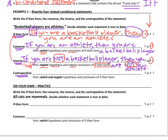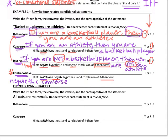For the contrapositive, we have to switch and negate the hypothesis and the conclusion of the if-then form. Going back to the if-then form: if you're a basketball player, then you are an athlete. We switch both parts — similar to the converse — which gives us: if you are an athlete, then you are a basketball player. Then we also put the word not in that statement, which is like negating the converse.